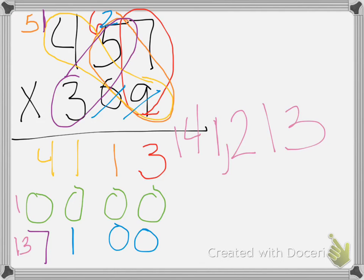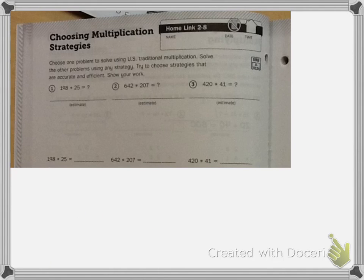Let's take a look at your homework. Here's home link 2-8, Choosing Multiplication Strategies. Choose one problem to solve using U.S. traditional multiplication. Solve the other problems using any strategies. So for one, you must use U.S. traditional. Then you can do anything you like: lattice, partial product, the area model. But make sure you choose one that is accurate and efficient. Show your work. Always show your work so we can see your thinking.